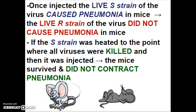He used mice for his experiment. When he injected the live S strain of the virus, it would always cause pneumonia in mice. Every time he injected a live R strain, the virus did not cause pneumonia. So, a live S strain caused illness, and a live R strain did not cause illness.